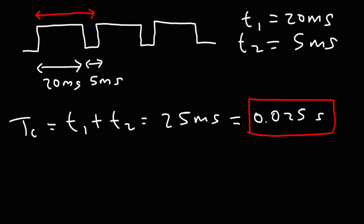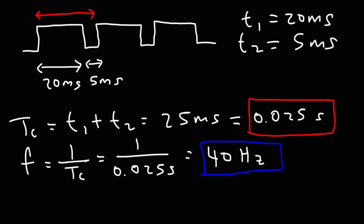Now let's calculate the frequency. The frequency is the reciprocal of the cycle time. It's 1 over TC. So it's 1 divided by 0.025 seconds. So this is going to be 40 hertz. So this means that there's 40 cycles every second.